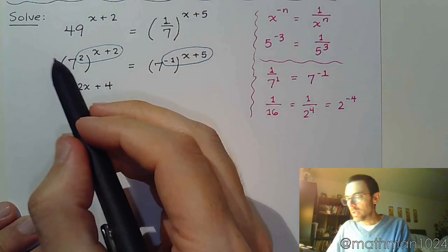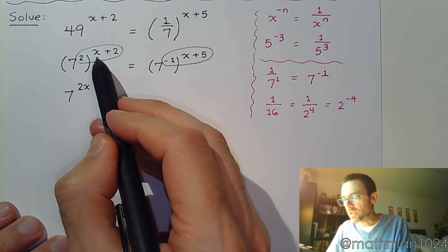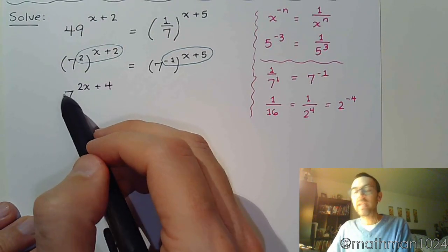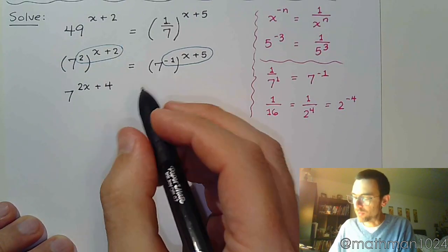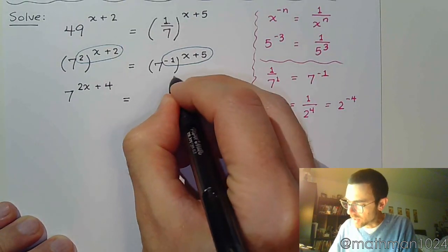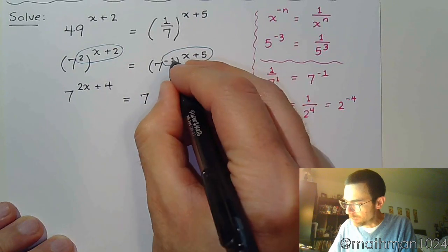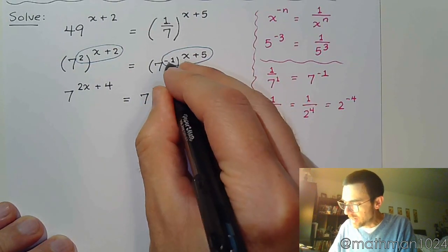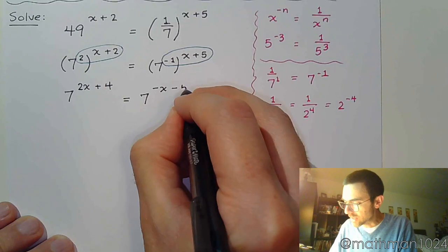So this becomes 7 raised to the 2x plus 4. Please remember that this 2 isn't just 2 times x. It's 2 times that whole group, so it has to distribute and hit the 2 as well, which is where we get the 4. On the right side, this is 7. Multiply this, so negative x, negative times positive 5 is negative 5.